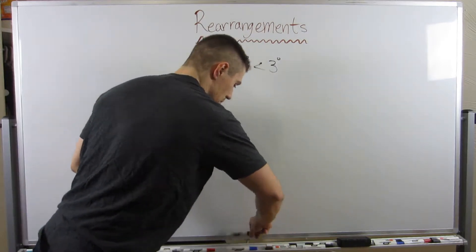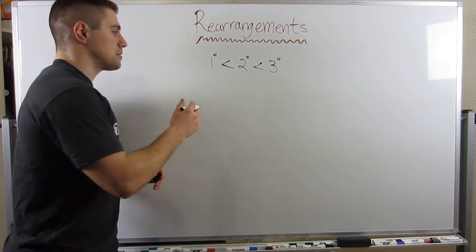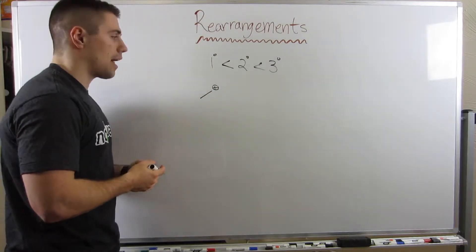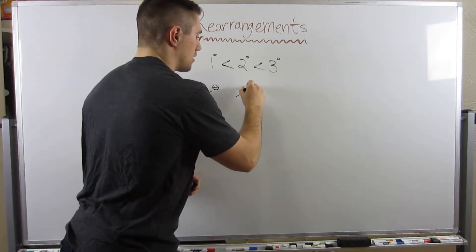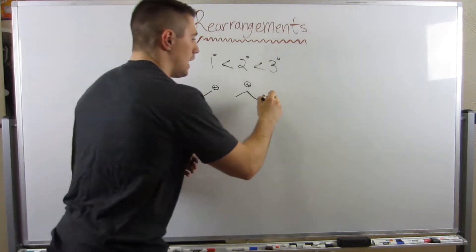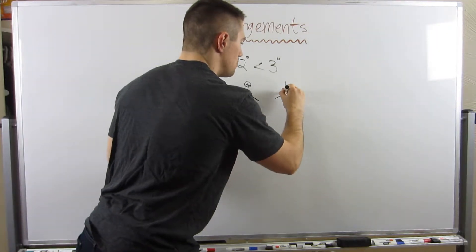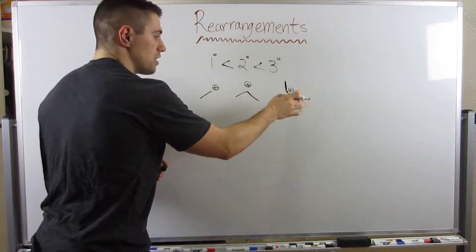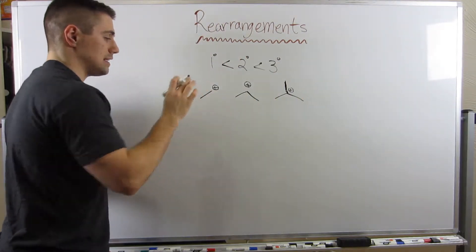To give you guys some examples: a primary carbocation like that, secondary carbocation such as that, and tertiary carbocation such as that. So most stable, second most stable, least stable.